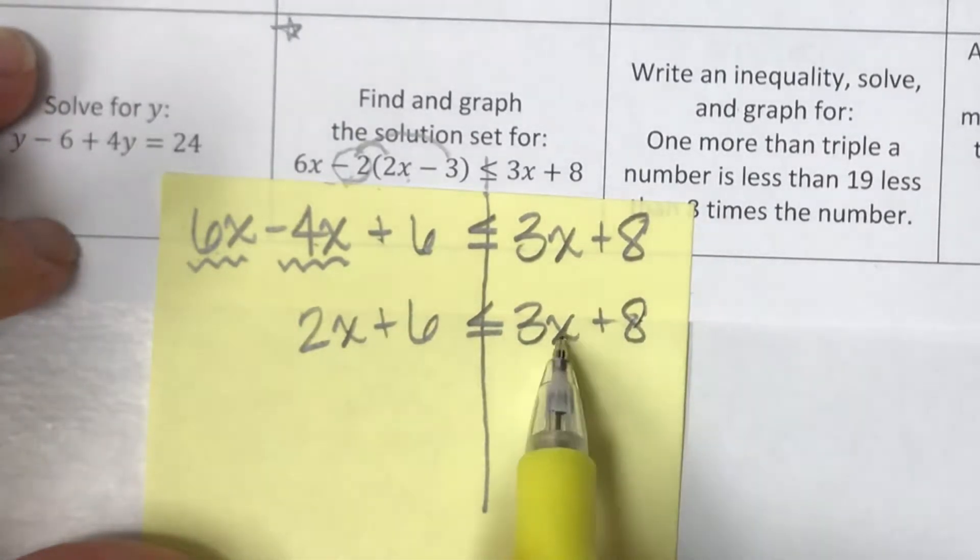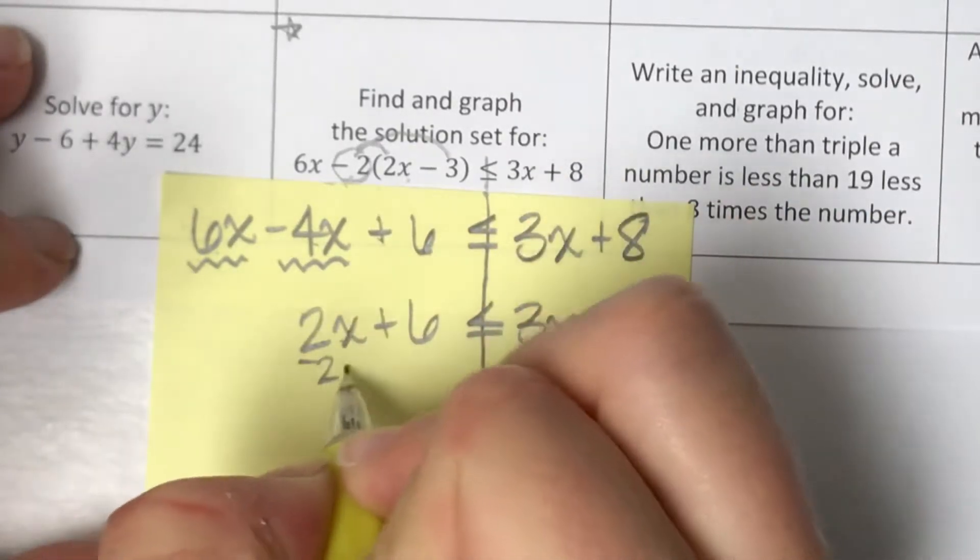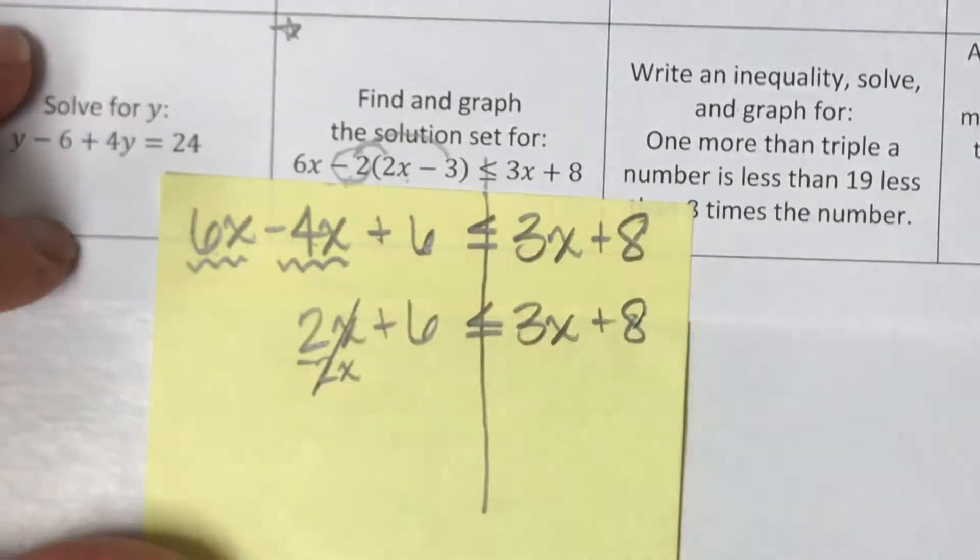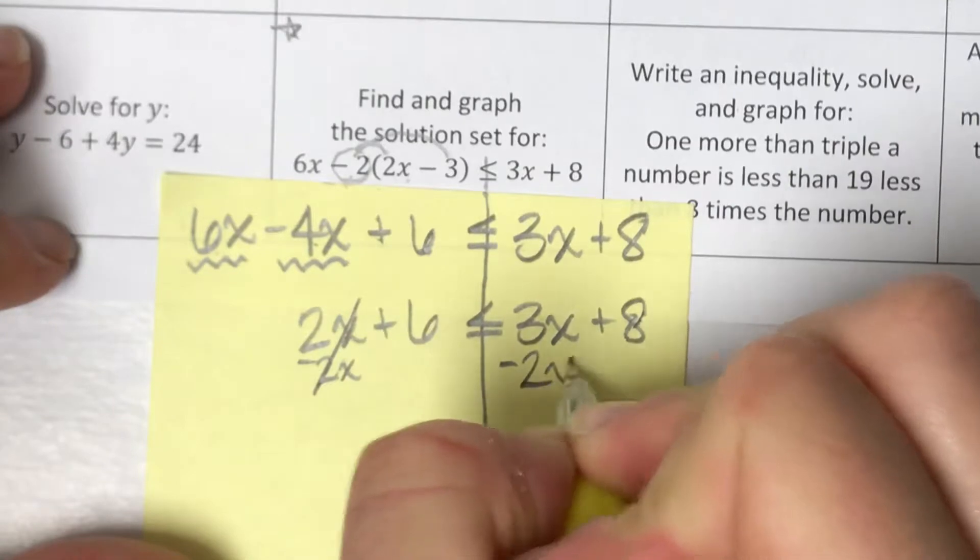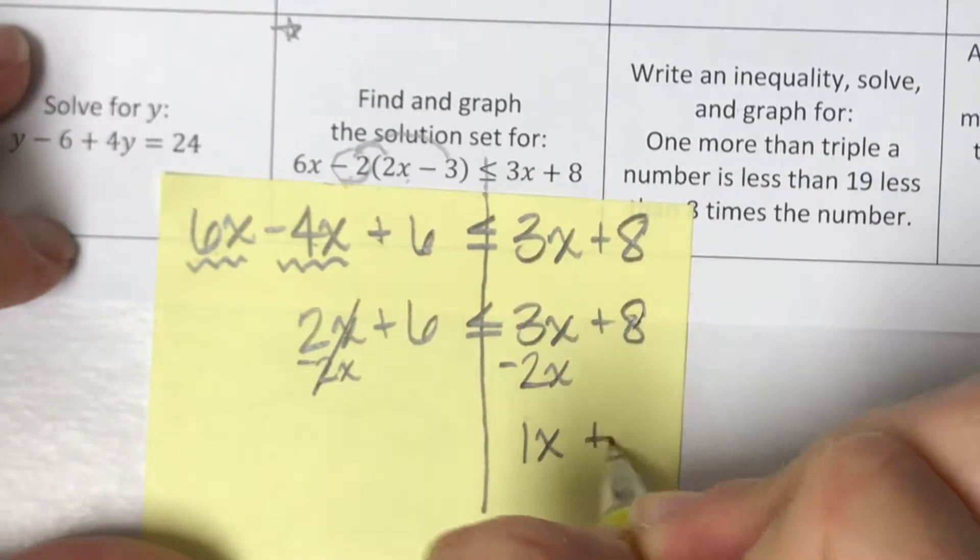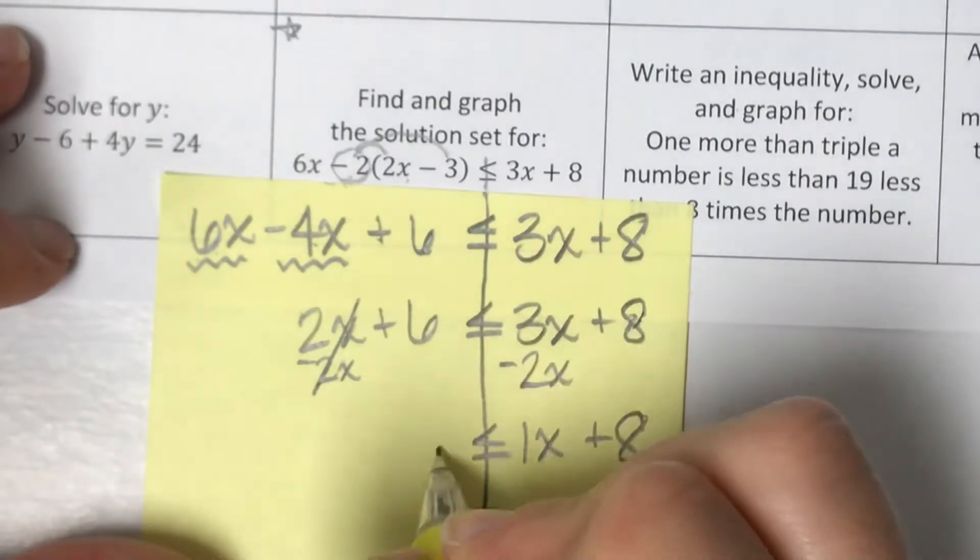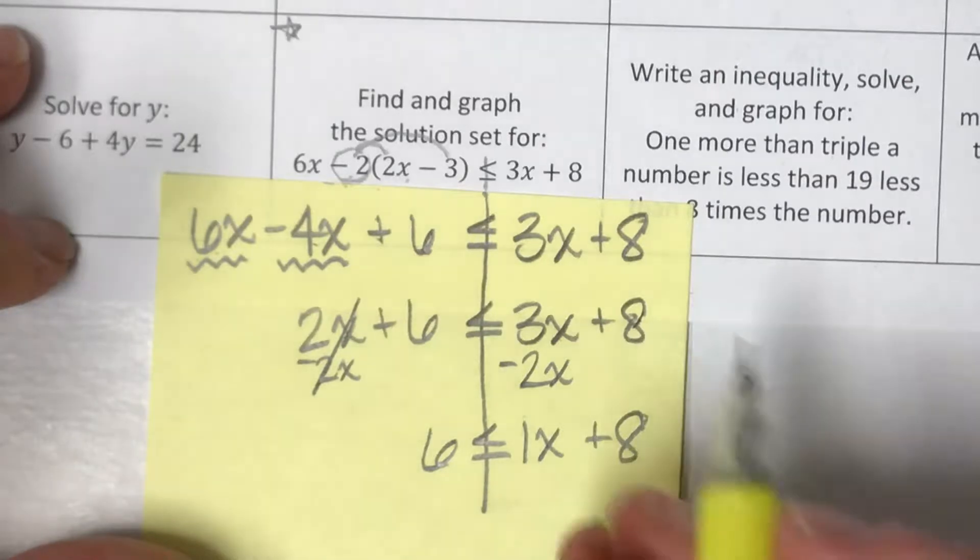Now I need to combine my variables. We typically try and combine and move the smaller of the two. So 2x is smaller. I'm going to subtract 2x to cancel it out on this side. But if I do it to one side of the equation, I also have to do it to the other side of the equation. So that's going to leave me with 1x plus 8 and then a 6 over here. Everybody good at this point?